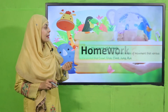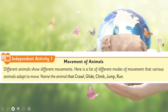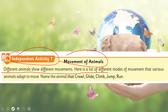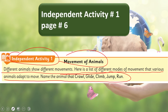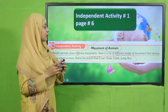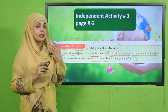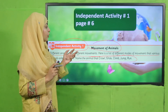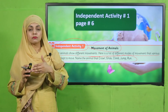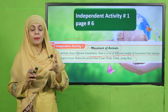For homework, complete independent activity number one: movement of animals. Different animals show different movements. On page number six, make a column — write the movement on one side and which animals show that movement on the other. For example: jump — rabbits hop; run — tigers, cats, dogs; glide — birds; crawl — snakes and other crawling animals.